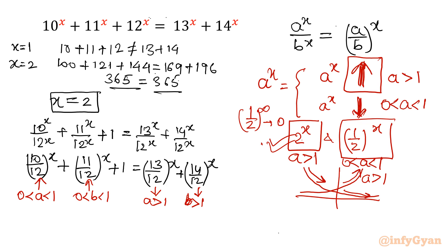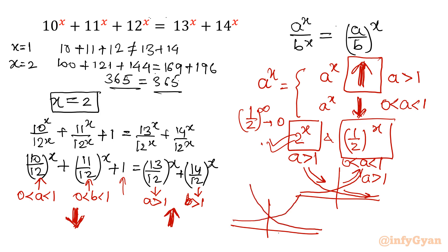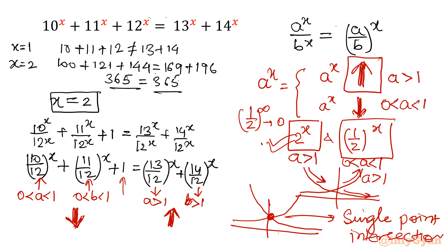So we can conclude: the left-hand side function is overall decreasing — adding 1 only shifts the graph up or down and does not affect its monotonic nature. The right-hand side function is monotonically increasing. One function is dipping down, the other is rising up, so they can only intersect at a single point. That single solution is the x = 2 we already calculated.